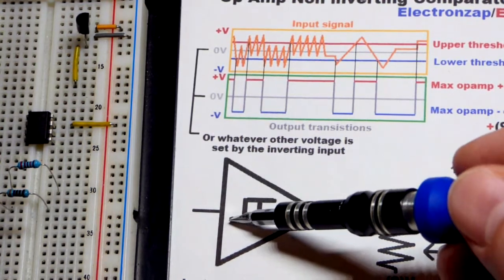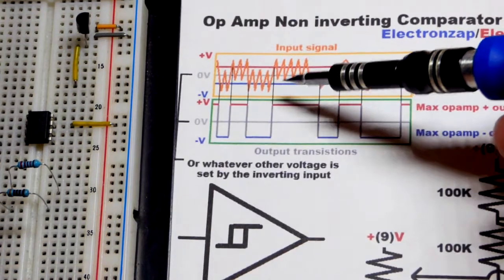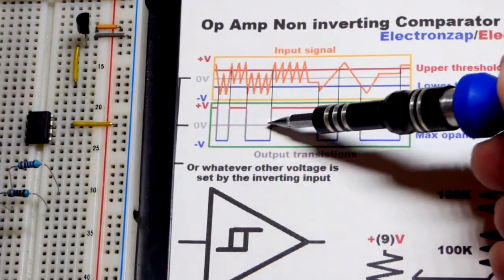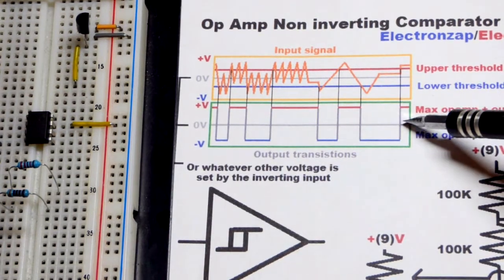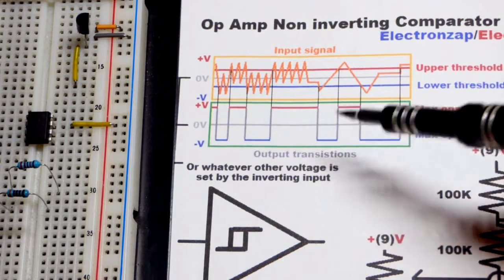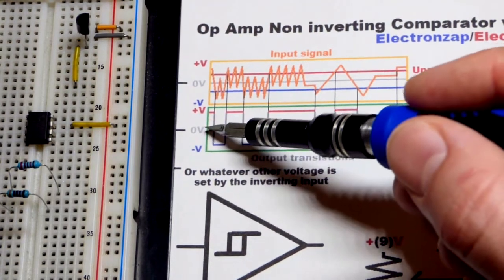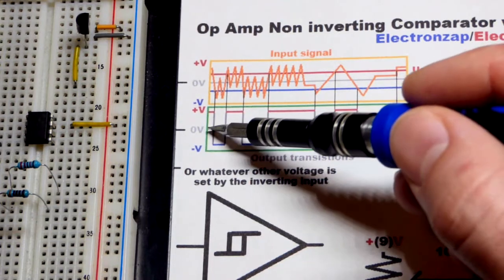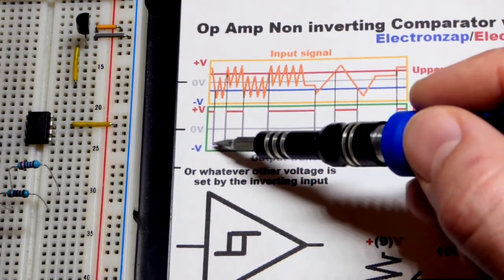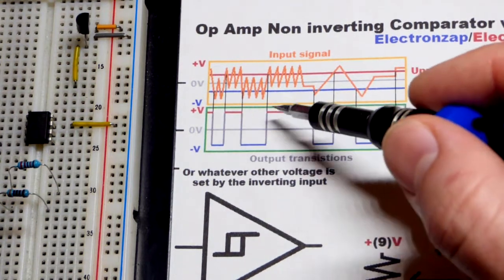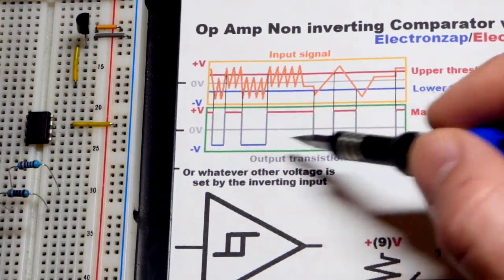In the last video we set zero volts at the inverting input. When the non-inverting input went any little bit higher than that we got a high output. When it got any bit lower than that the output went low.